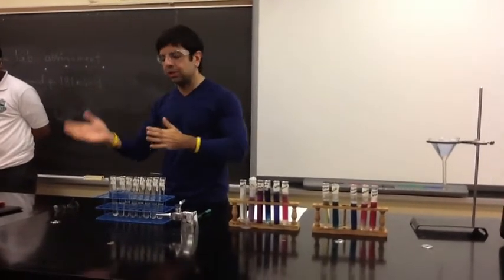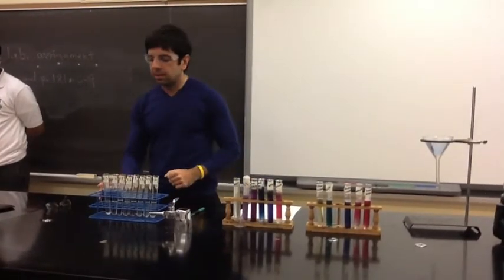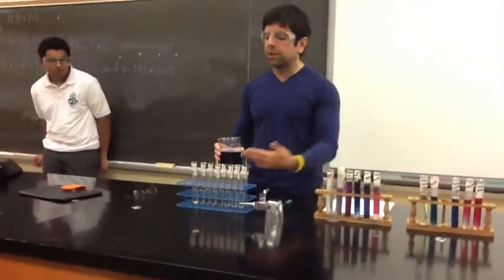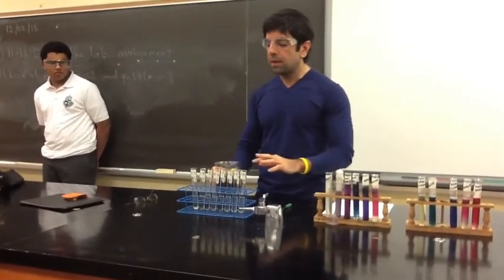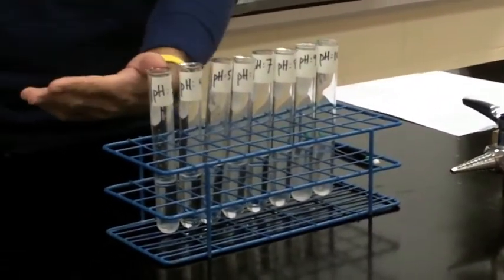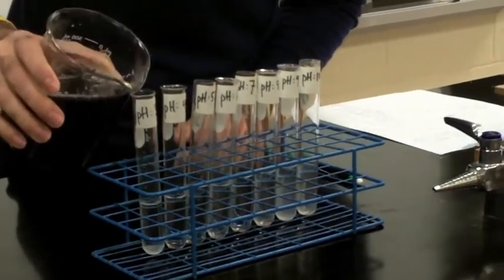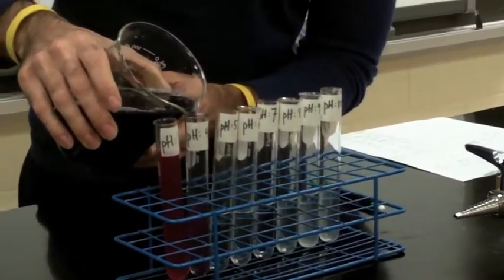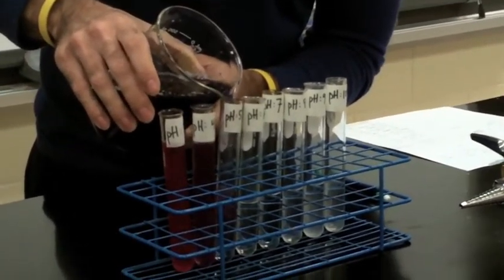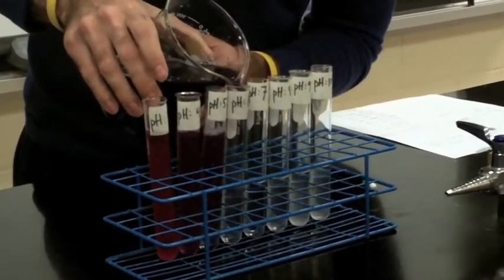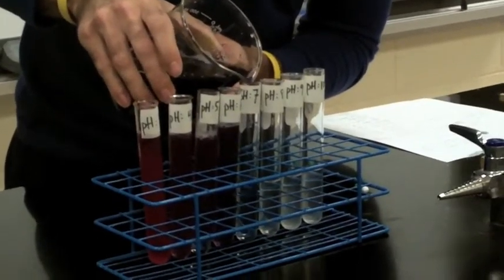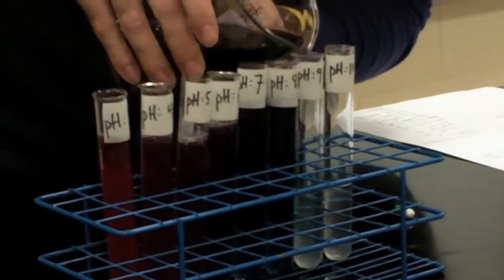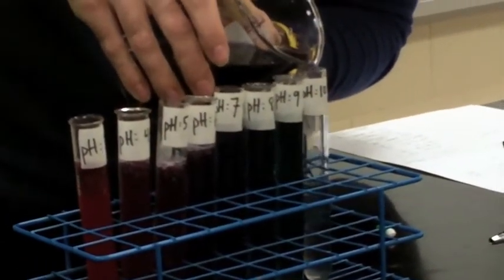I've got pH values here going from three to ten — missing pH values lower than three and higher than ten. Let's look at the color spectrum as I pour them in. Starting at pH three — acidic — and working upward: the acidity becomes less and less. Notice the color change going up to pH six, then neutral pH seven, then pH eight, pH nine, and pH ten.